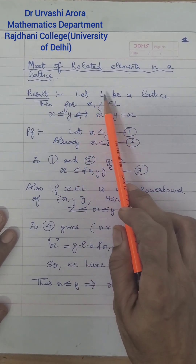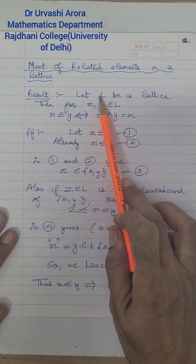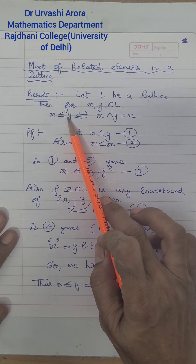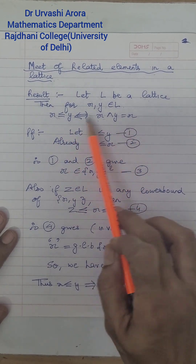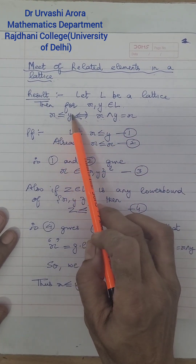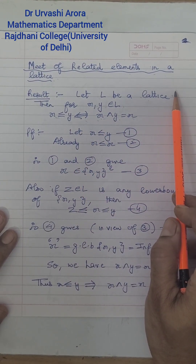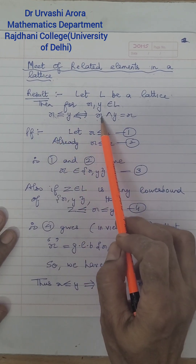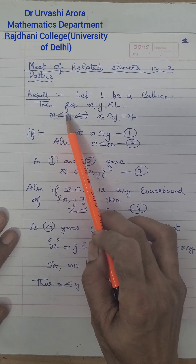The result goes like this: let L be a lattice. Suppose X and Y are any two elements belonging to L. Then if X is related to Y, or X is less than or equal to Y, this implies that the meet of X and Y is X, the element on the left. The converse is also true: if the meet of X and Y is X, then this implies that X is related to Y, i.e., X is less than or equal to Y.